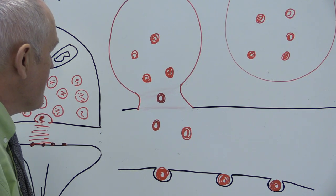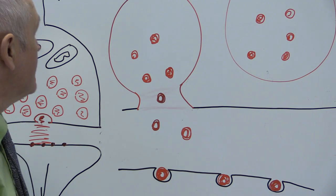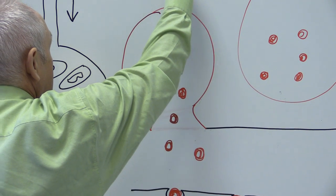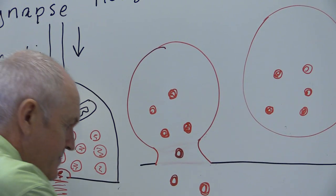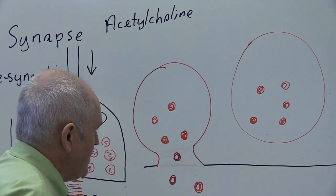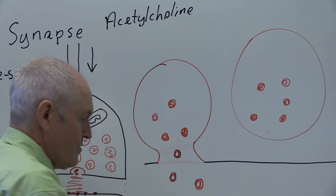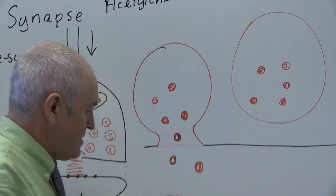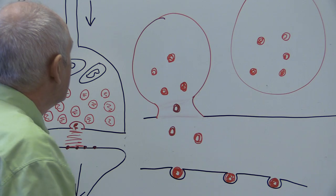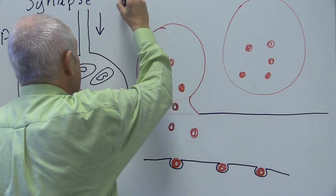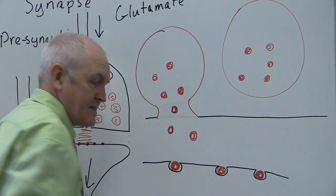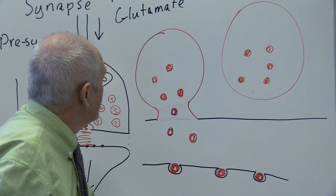At the neuromuscular junction, the chemical transmitter is acetylcholine — so if this were a muscle and that were the end of a motor neuron, the transmitter would be acetylcholine. Alternatively, a synapse in the brain that wants to stimulate brain activity could use a chemical transmitter called glutamate, which is an excitatory transmitter that stimulates neuronal activity.